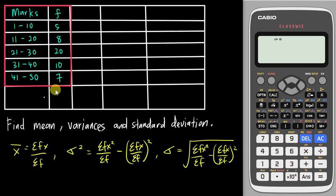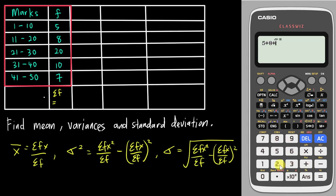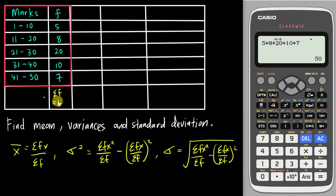To find the sum of f, I simply add all the f values together. So my sum of f is all these numbers added together. Using the calculator quickly: 5 plus 8 plus 20 plus 10 plus 7, so my sum of f is 50.